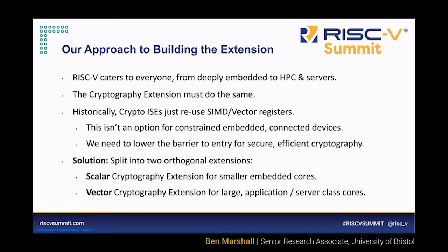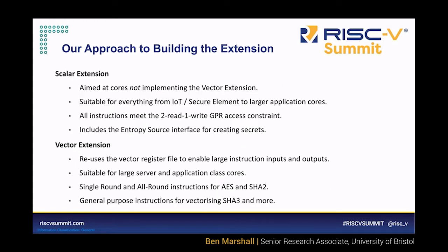The solution we hit upon was to design two sub-extensions: one for small secure element or larger application-class cores that don't use the vector extension, including access to an entropy source interface for creating cryptographic secrets — something very new that RISC-V is doing. And then there's also the vector extension for much larger cores that do implement the vector register file, more suitable for large server and application-class cores. These include single-round instructions for AES and SHA-2 and general-purpose instructions for SHA-3, which is what Barry will talk about later.